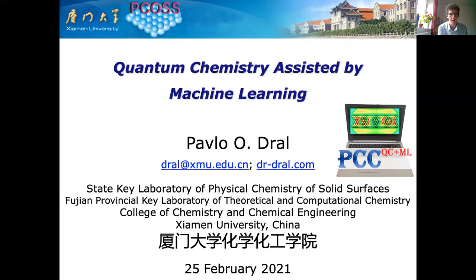The Thomas Young Center is the London center for the theory and simulation of materials. It is made up of about 200 research groups from the four main London colleges — Queen Mary, UCL, Imperial, and King's College — and is probably the largest concentration of materials and molecular modelers in the world. One of its missions is to provide a collaborative environment and organize events such as today's.